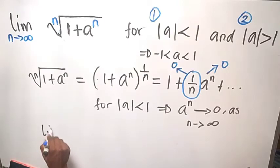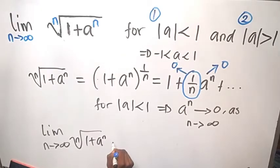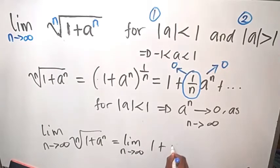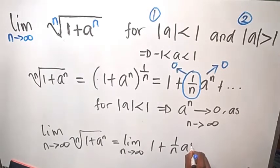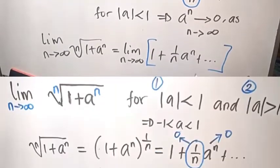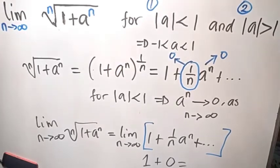So that means the limit as n tends to infinity of the nth root of 1 plus a to the power n, which is the same as the limit as n tends to infinity of 1 plus (1/n) times a raised to the power of n plus and so on — this limit of 1 as n tends to infinity is just going to be 1. So the answer for Case 1 is 1.